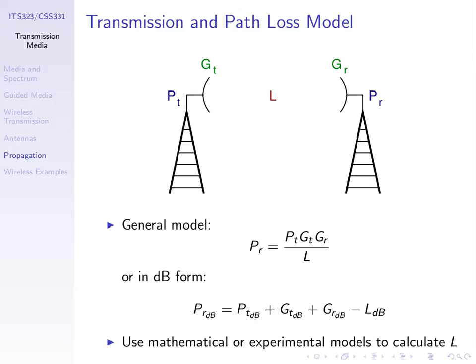One of our previous examples was whether we could transmit using wireless access points from my house to my friend's house. If we know the transmit power, the minimum receivable power, and the antenna gains, we can find how much loss we can tolerate between two points. Models then allow us to determine what distance corresponds to a given amount of loss.